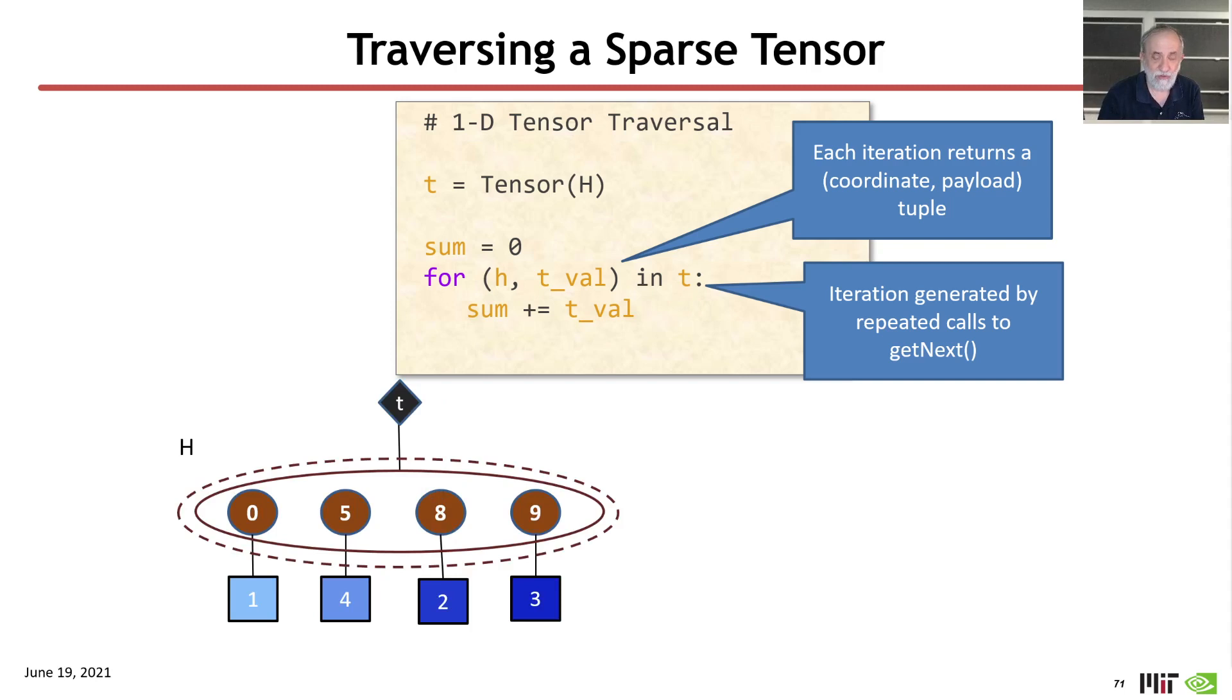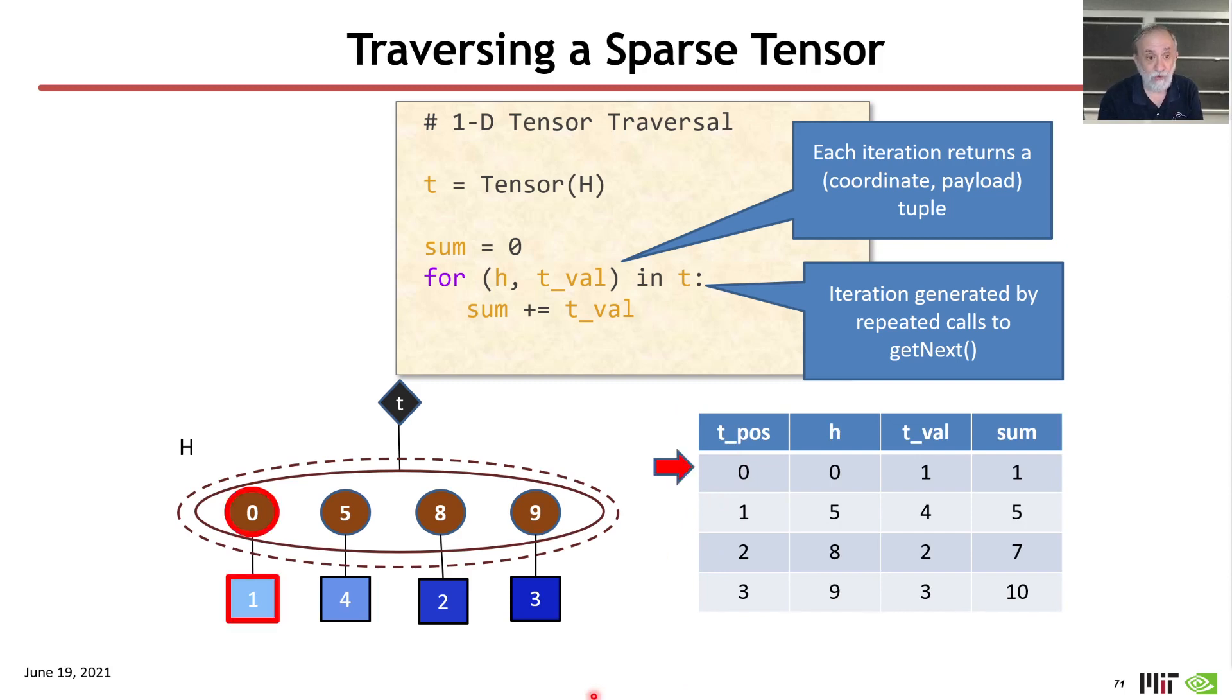If I think about that in terms of what is happening in the fiber tree, I'm starting with an iteration through the fiber. If I start with position zero, I get back coordinate zero over here, and value one, and I create the sum. I can then go to the next position in the fiber, and now at this position, I have coordinate five and value four, which I can add into my sum.